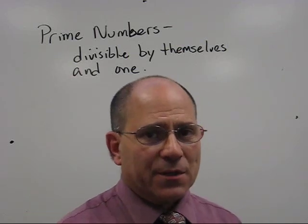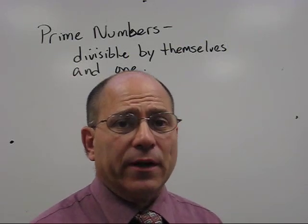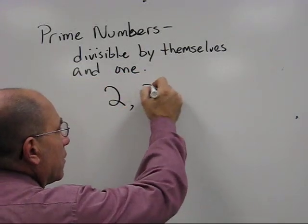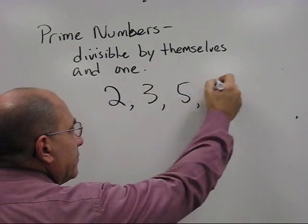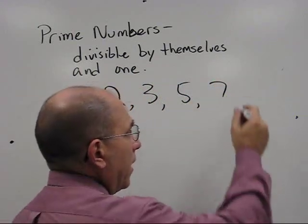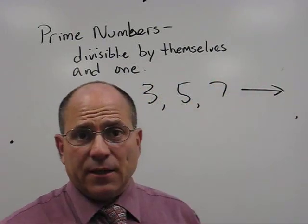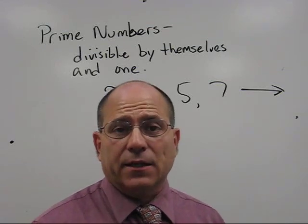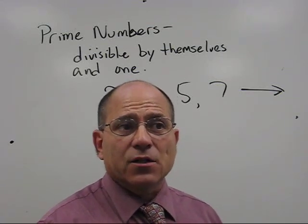For our purposes we're going to be using two, three, five and maybe seven. So for right now let's write this here. Two, three, five and perhaps seven. Now they go on out to infinity obviously. You know 11, 13, as I said 17, 19, 23 and so on.